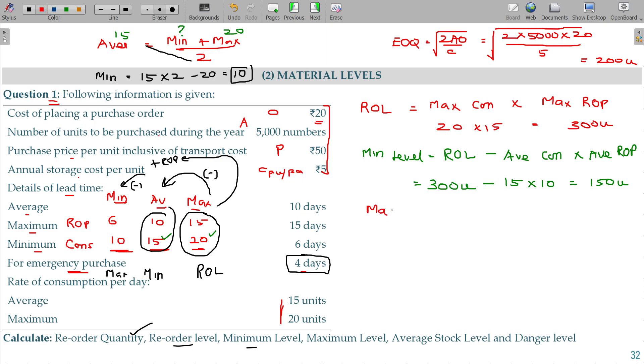And maximum level. In case of maximum level we have to start with reorder level, do not forget to add the reorder quantity, from there minimum consumption into minimum reorder period should be subtracted. Reorder level is already calculated which is 300. Reorder quantity 200 already calculated. Minus minimum consumption 10, minimum reorder period 6, so 10 into 6, 60 should be subtracted from 500, so 440 units will be the maximum level.